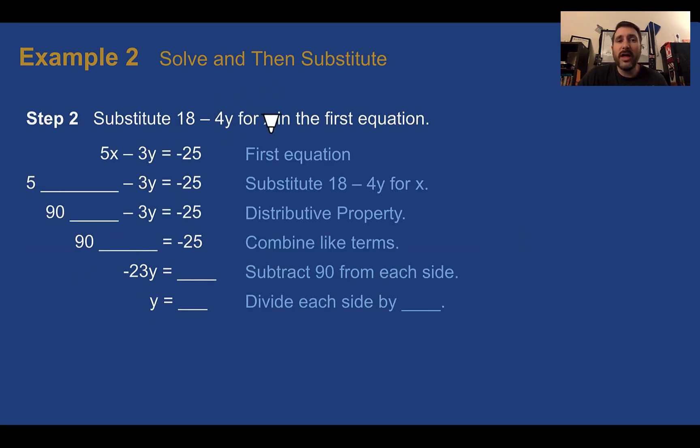Now, we know that x was equal to this right here, so we're going to take it and plug it in where x was. So 5 times where x was was 18 minus 4y. Now, same as we've been doing, distribute, we'd end up with 90 minus 20y, minus 3 more y. Negative 20 minus 3 is negative 23. I'm still going through, just solving for y. I'm going to subtract 90 from both sides and get negative 115. Finally, dividing both sides by negative 23, then I get 5. So y is equal to 5.